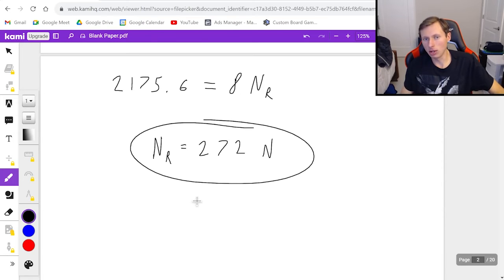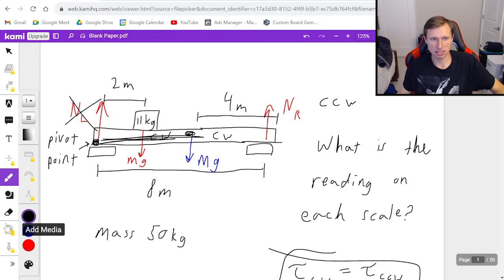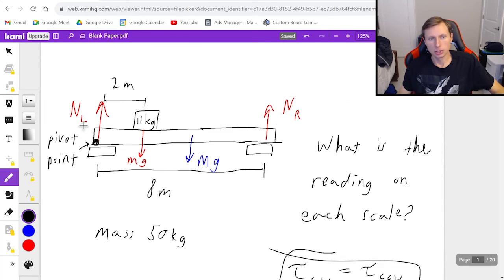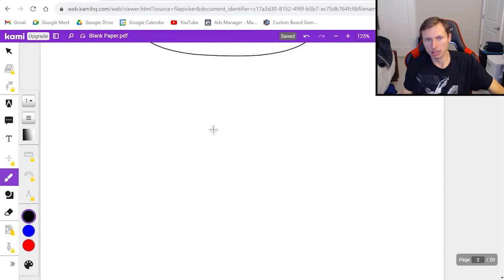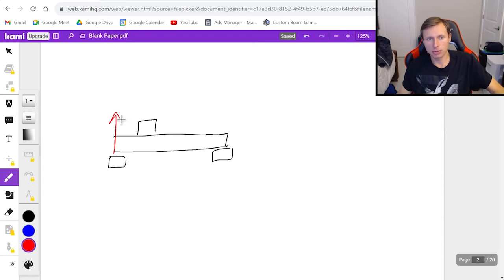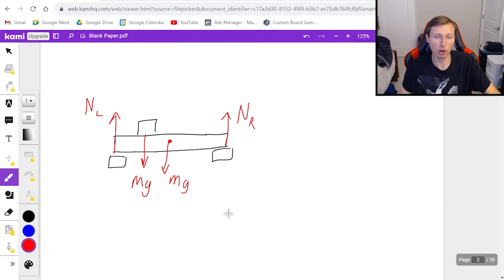Now if I want to find NL, the left pivot point, I have two options. If I want to find NL, I can do one of two things. The first is I can move the pivot point to the other side, to NR, and solve the problem again. But that's not the fastest way. The fastest way is I redraw the picture. I have my two bathroom scales here and here, my 11 kilogram mass, and I draw the free body diagram one more time: NL, NR, mg, and the other mg from the 50 kilogram mass, the bar, in the middle.